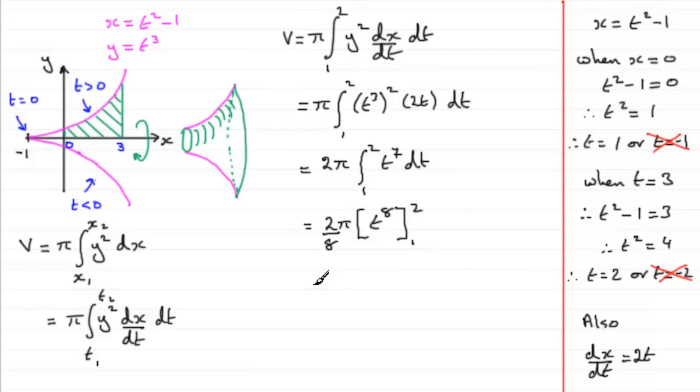The 2 and 8 cancel to a quarter, giving π/4 [2⁸ - 1⁸]. Working this out: π/4 [256 - 1] = 255π/4. Since this is a volume, I'll write units³ or cubic units.